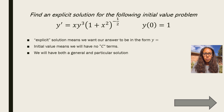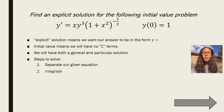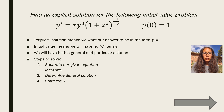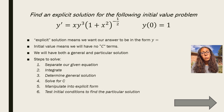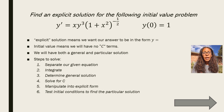The steps we're going to use to solve are as follows. First, we separate our given equation, because it is a separable differential equation. Next, we integrate both sides. Then we determine the general solution. We use our initial value conditions to solve for c. We manipulate it into explicit form. And finally, we test our initial conditions to find the particular solution. Note that steps 4 and 5 can be switched, but we'll talk about why that can cause problems a little later.